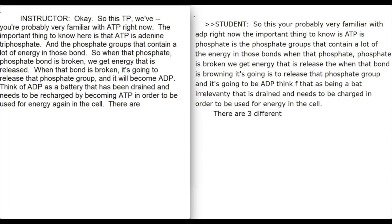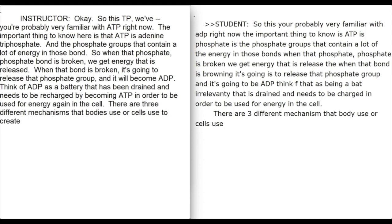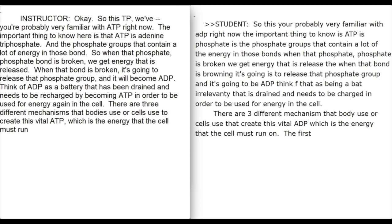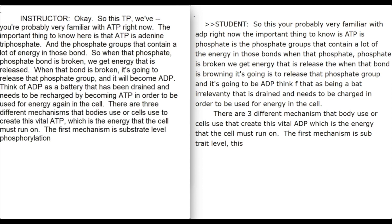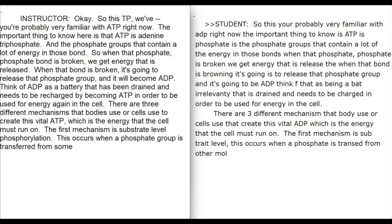There are three different mechanisms that cells use to create this vital ATP, which is the energy that the cell must run on. The first mechanism is substrate-level phosphorylation. This occurs when a phosphate group is transferred from some other molecule and put on ADP to create ATP.